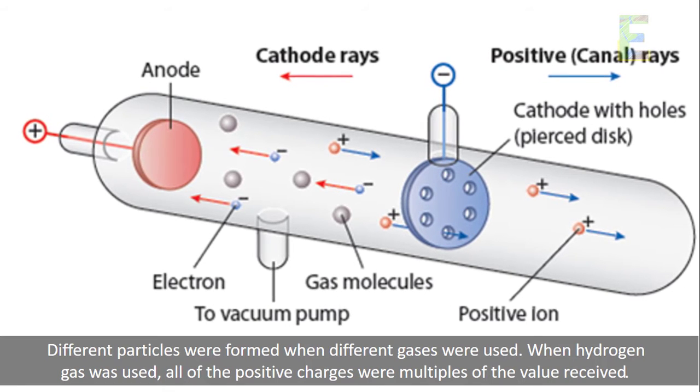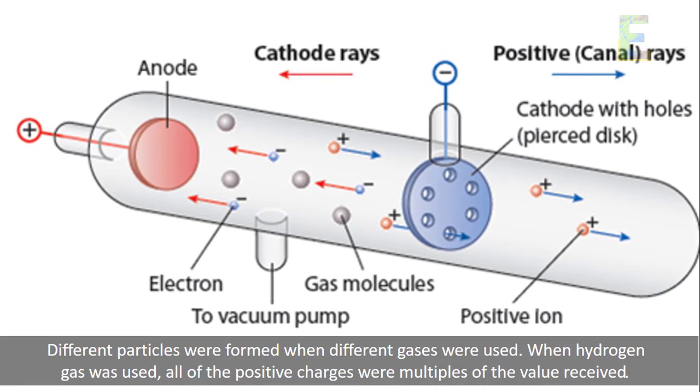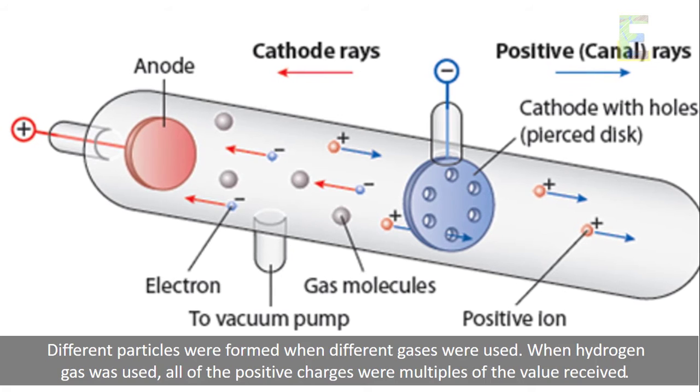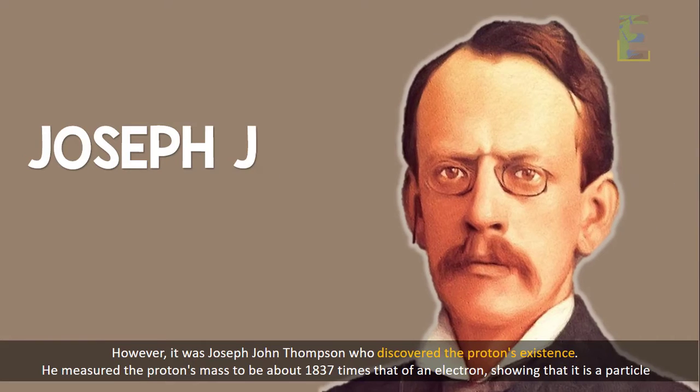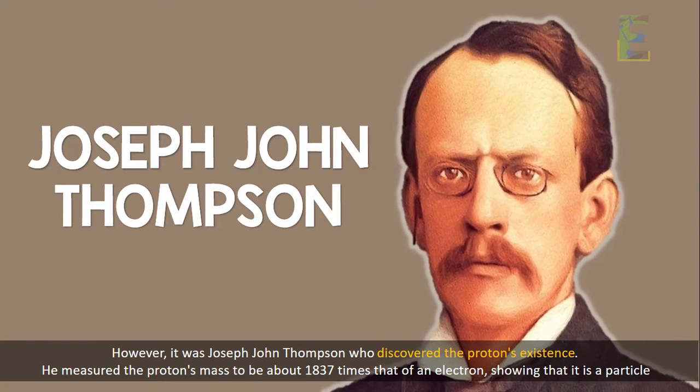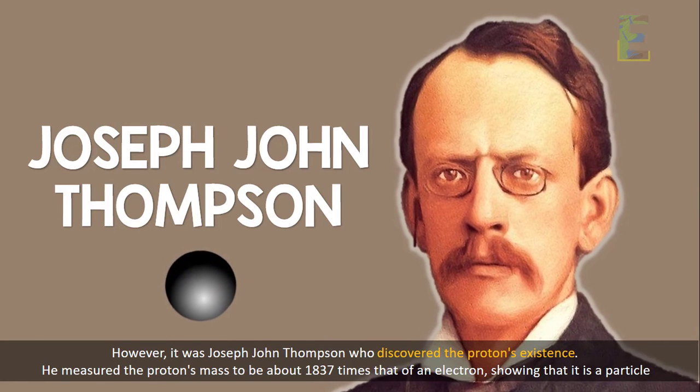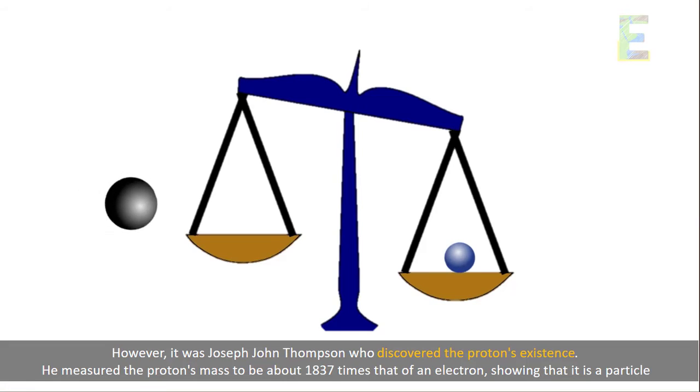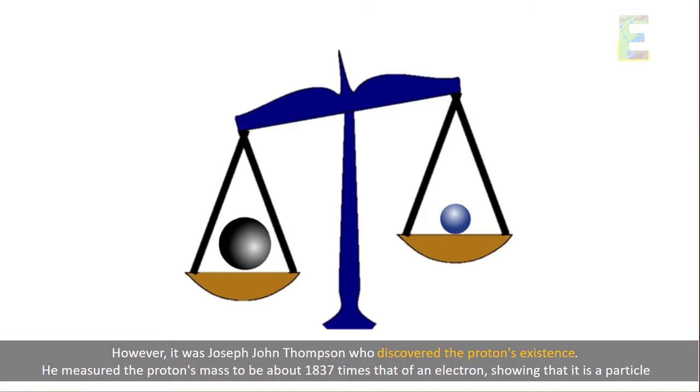When hydrogen gas was used, all of the positive charges were multiples of the value received. However, it was Joseph John Thompson who discovered the proton's existence. He measured the proton's mass to be about 1,837 times that of an electron, showing that it is a particle.